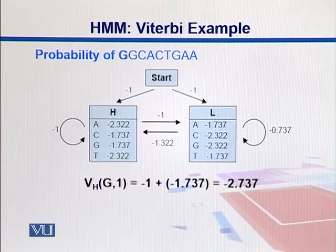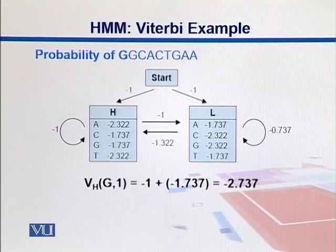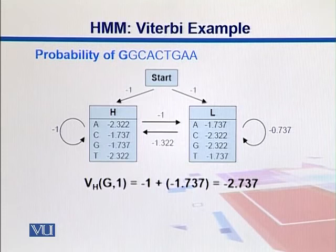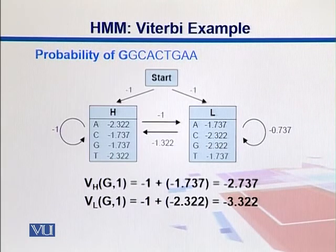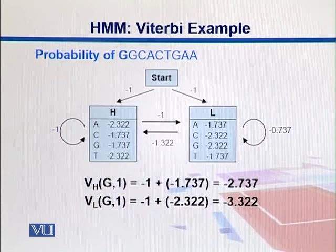At position 1, what's the probability this G is coming from H? We take the transition probability of starting in state H, which is -1, and since we've taken logs, we add values rather than multiply. The probability of G in state H is -1.737, so the total is -2.737. For state L, it's -3.322. Since numbers are negative, -2.7 is the higher value, so it's most probably from state H.